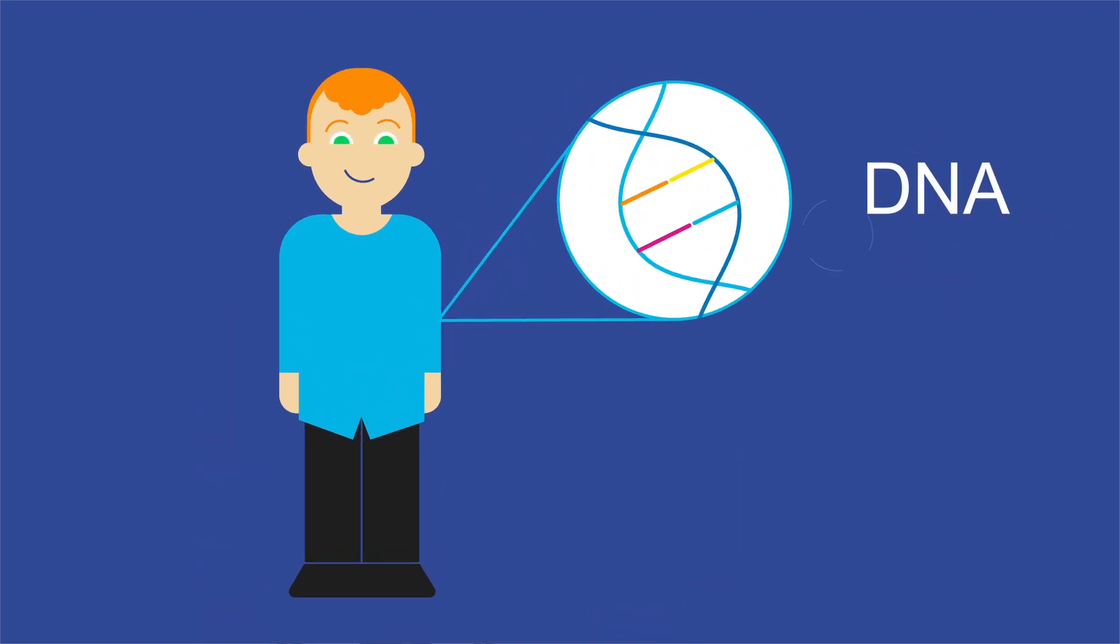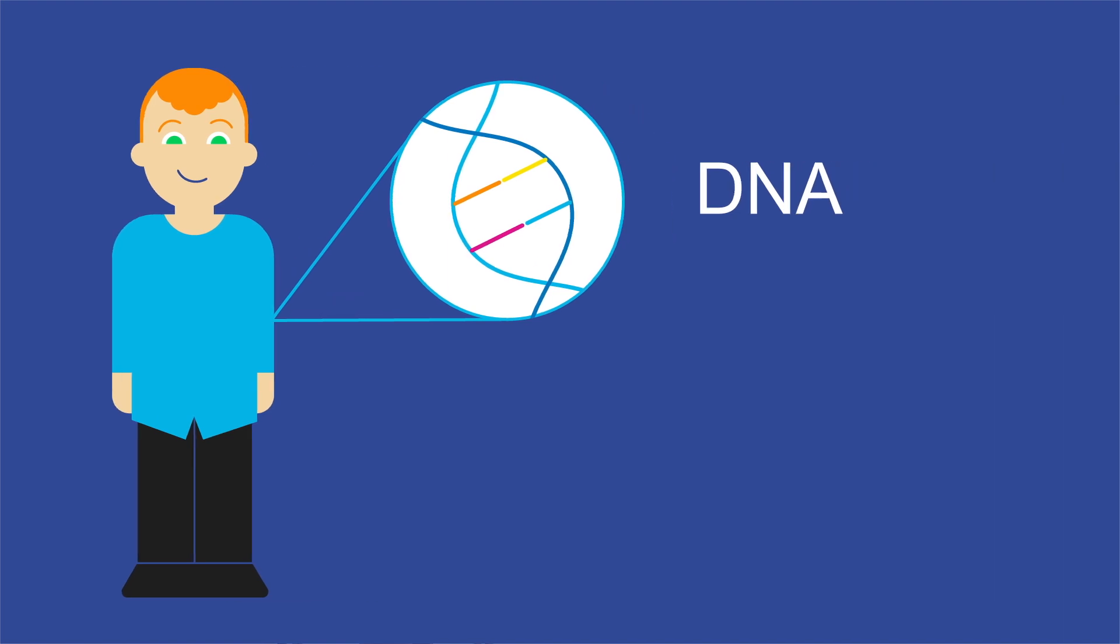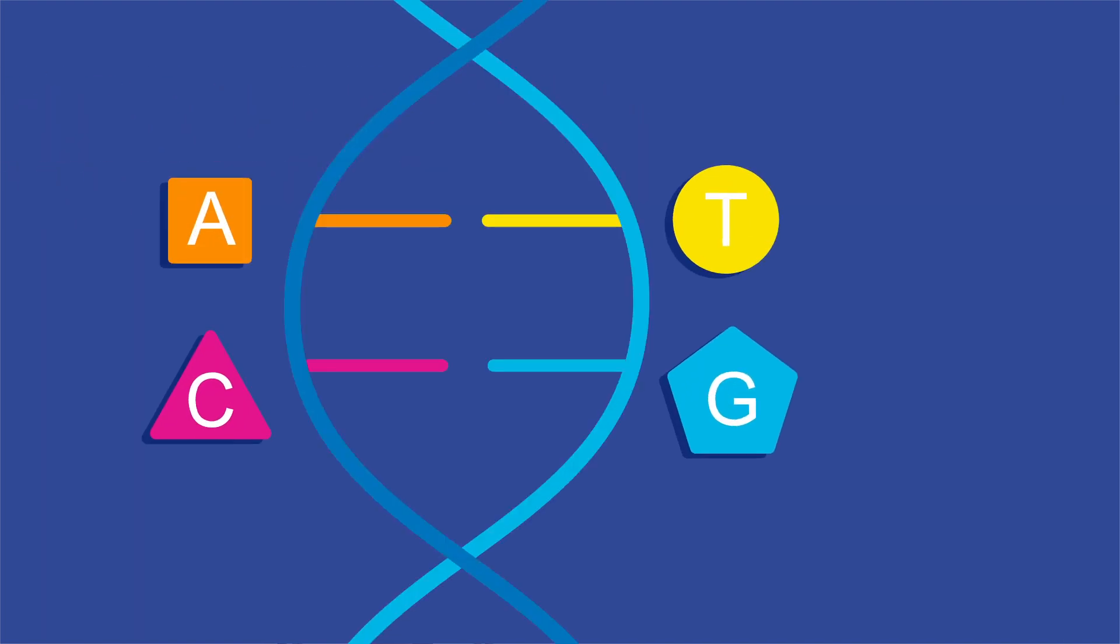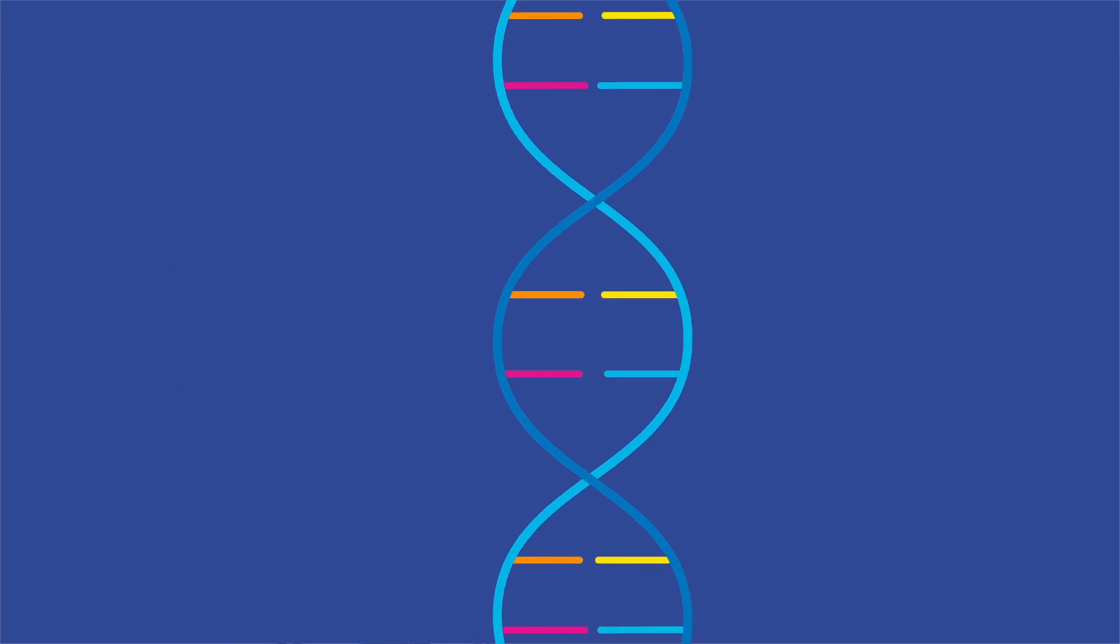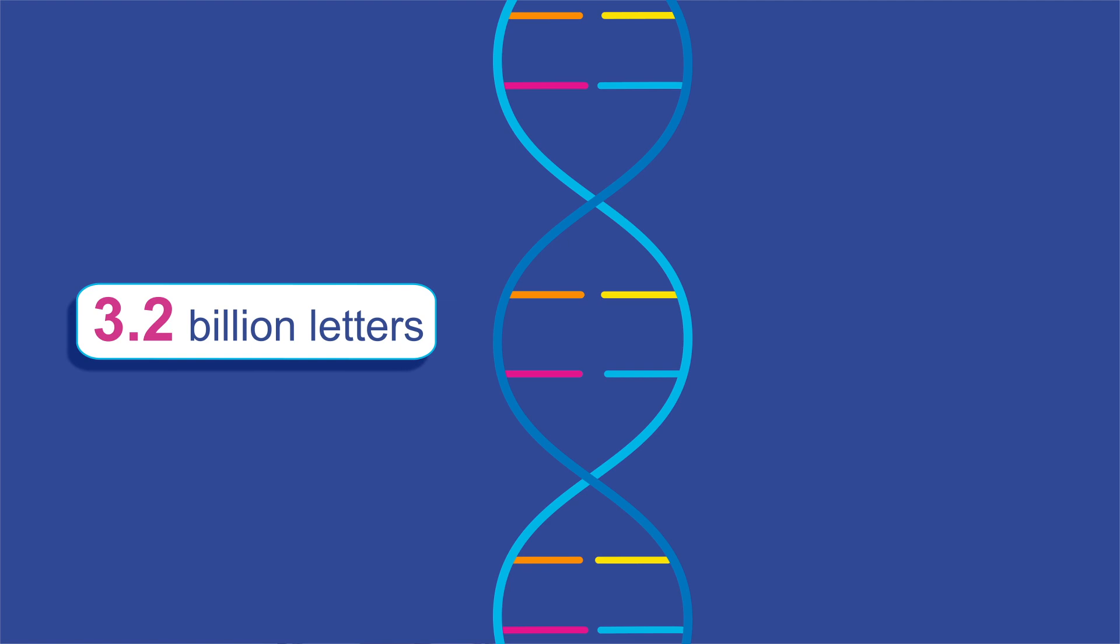It is written in a code called DNA which is a long sequence of chemical building blocks. Each building block is known by a particular letter. Your genome is all 3.2 billion letters of your DNA.